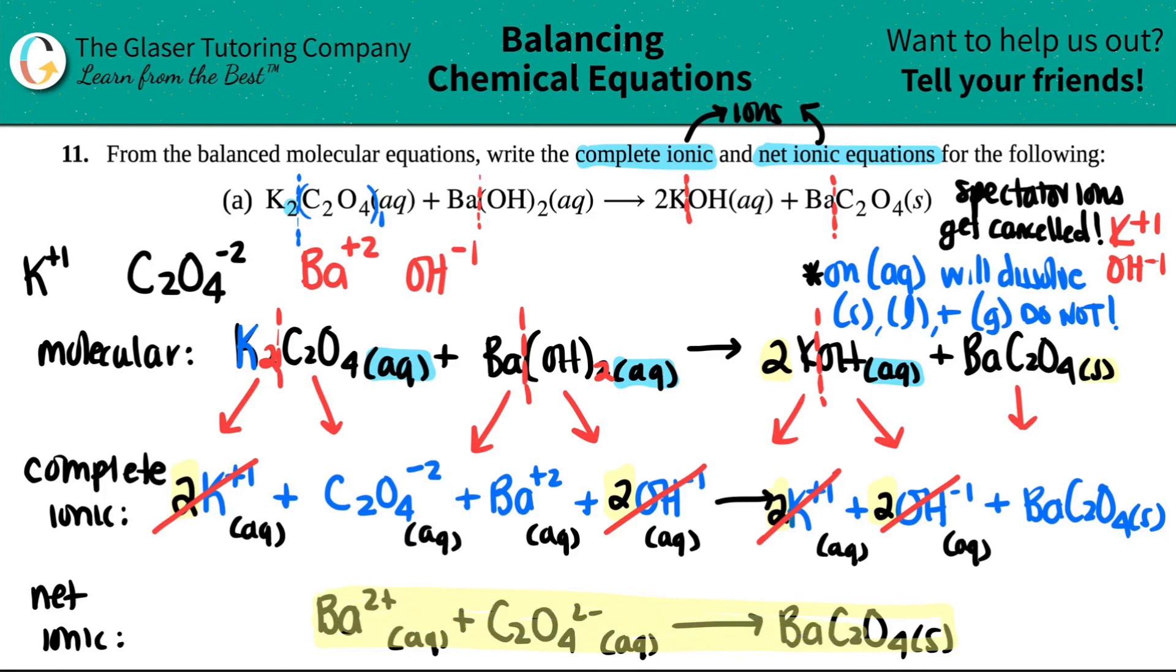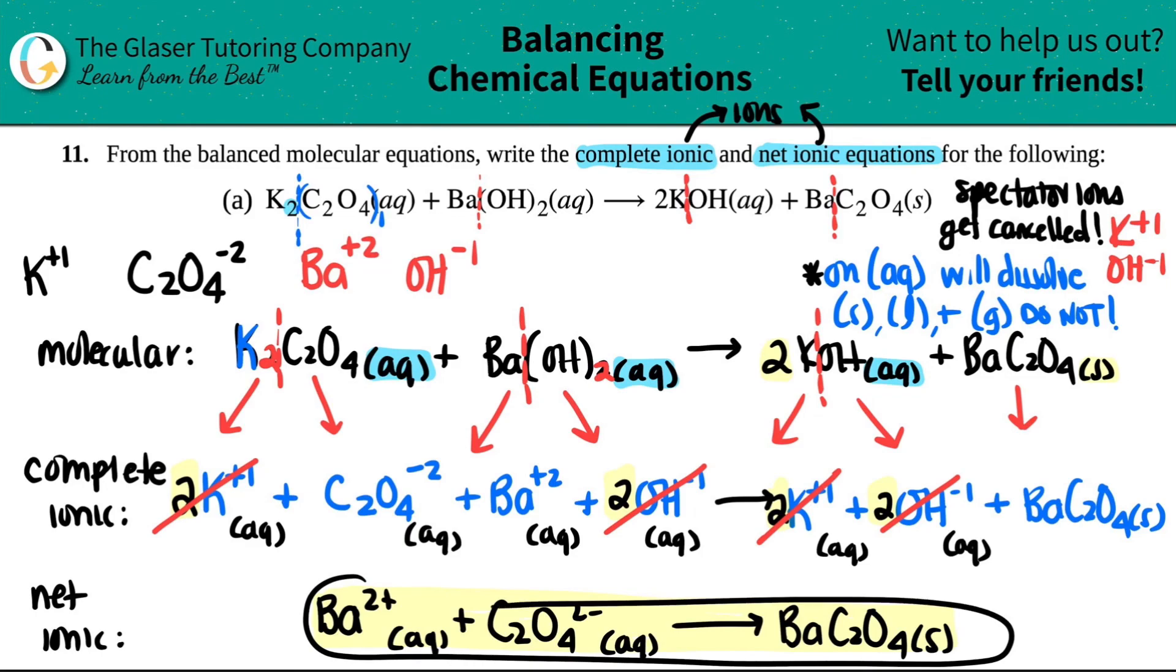This is the only thing that is happening in this reaction. Everything else, all the other ions are just chilling. They're not really reacting, they're just hanging out. They're watching. The only reaction that's going on is between the barium and the oxalate. And that's it.